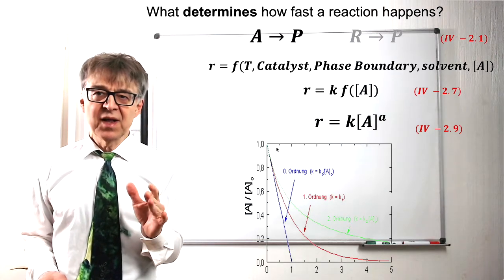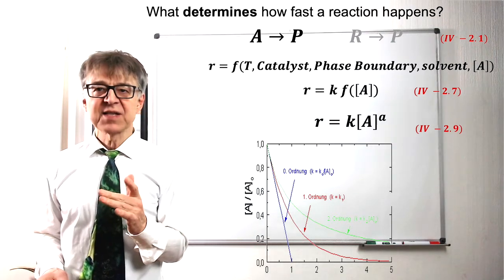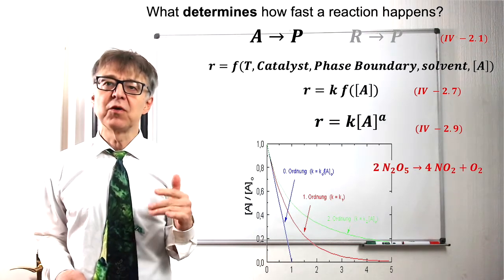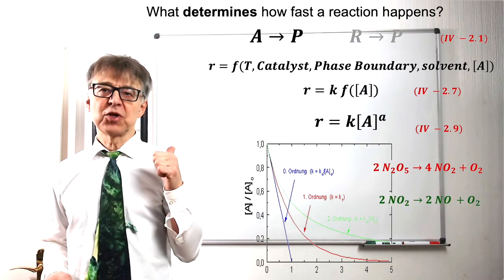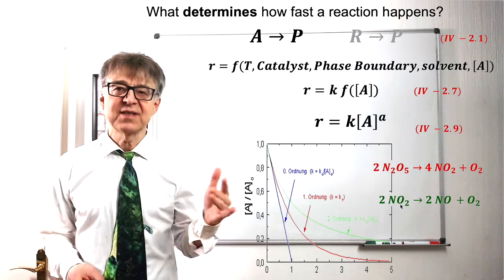In general, the order of a reaction cannot be predicted. For example, it has been found experimentally that the decomposition of N2O5 is first order, while the decomposition of NO2, at first glance a very similar reaction, is second order.